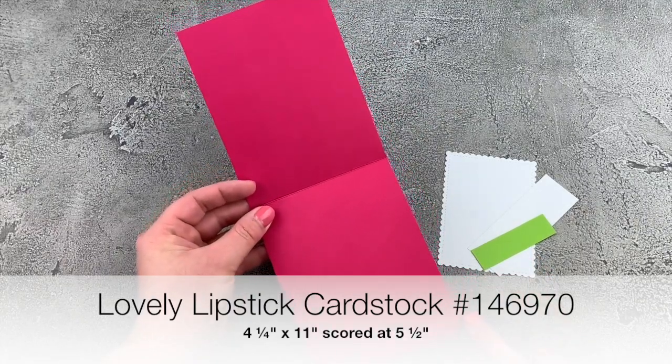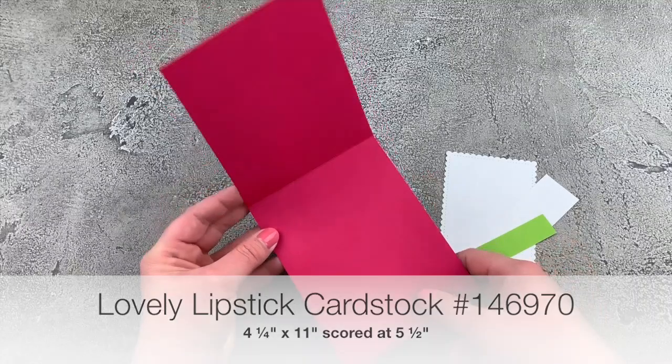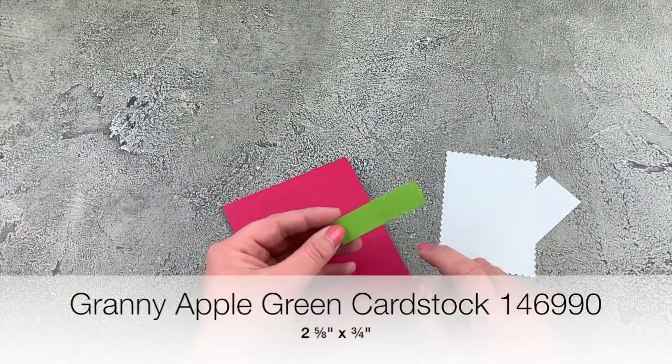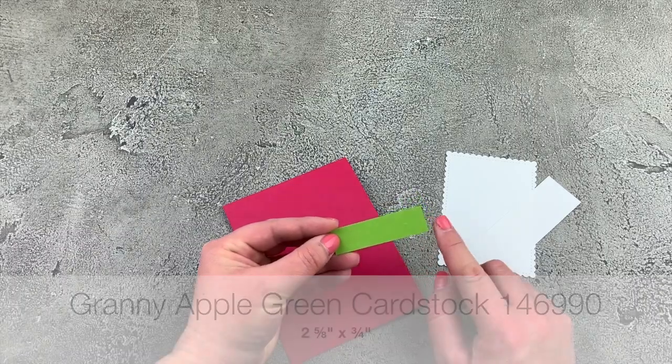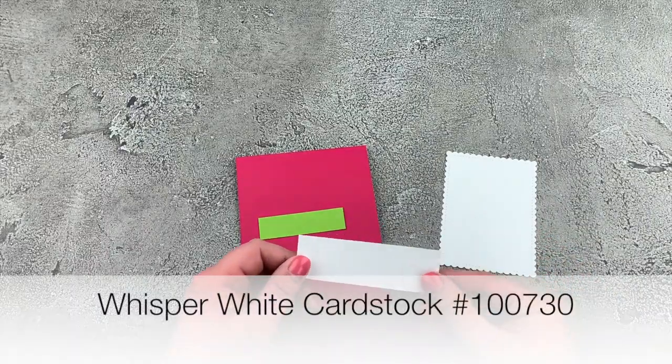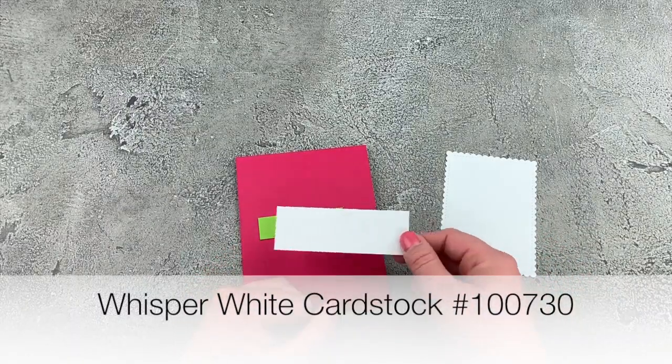This is four and a quarter by 11 inches, scored at five and a half. I've got a piece of Granny Apple Green cardstock. This is two and five eighths by three quarters. Then I've got just a scrap of my Whisper White. We're going to stamp on here and cut something out.